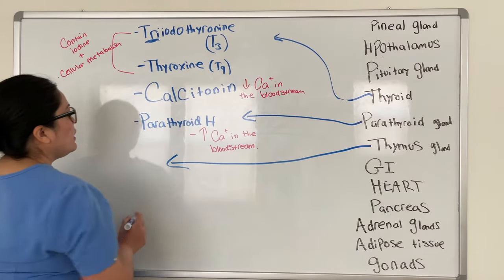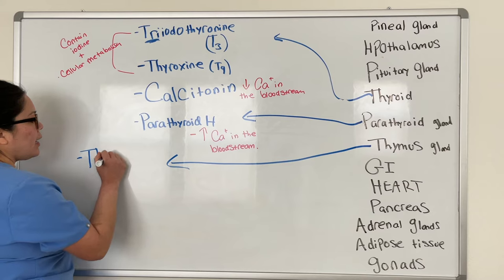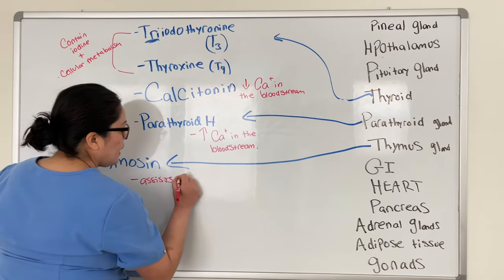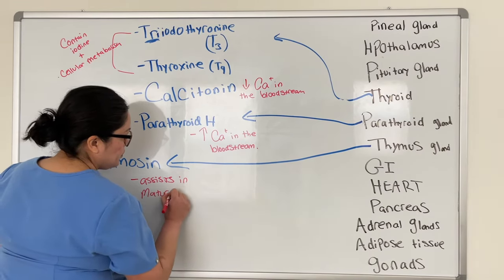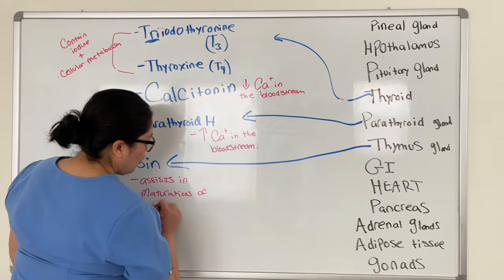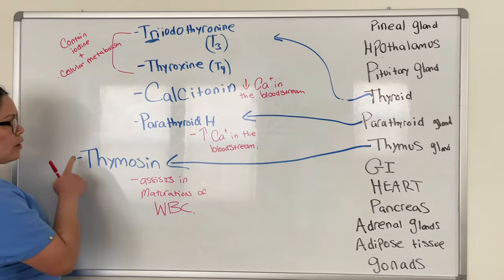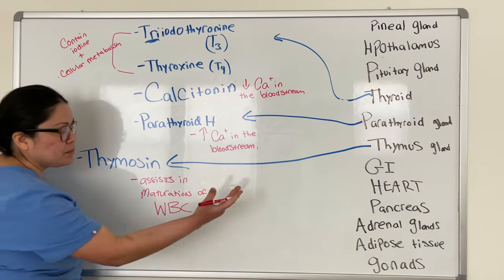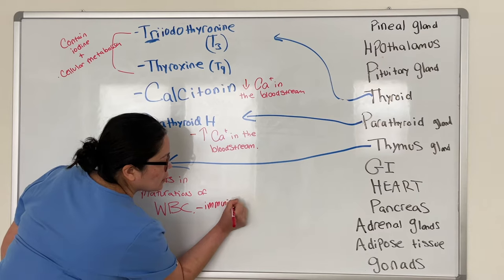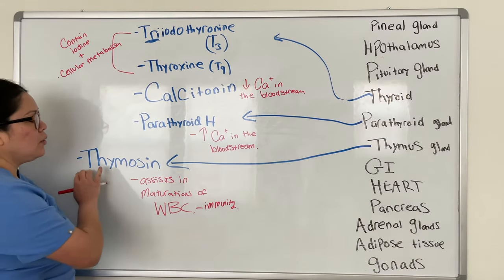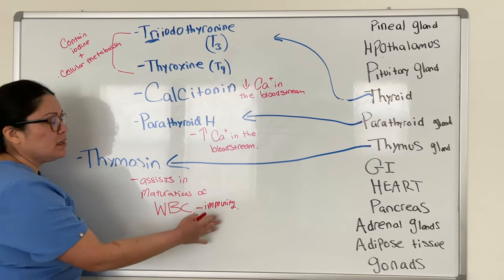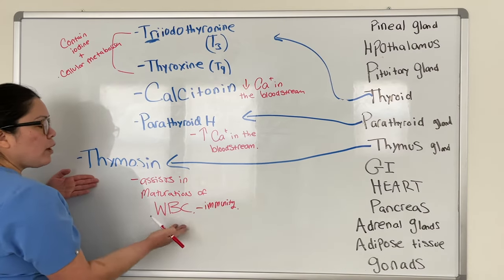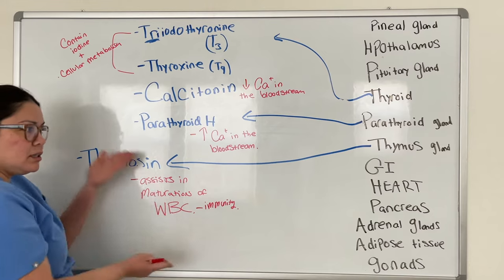Thymocin assists in the maturation of white blood cells — so relate thymocin to white blood cells and immunity. If you see a question about thymocin or immunity, these two are going to pair up: thymocin helps with immunity, immunity comes from white blood cells, which comes from thymocin.